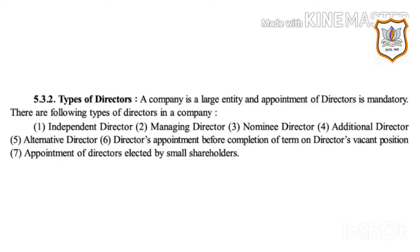Types of Directors: A company is a large entity and appointment of a director is mandatory. There are the following types of directors in a company: 1. Independent Director, 2. Managing Director, 3. Nominee Director, 4. Additional Director, 5. Alternative Director, 6. Director appointed before completion of term on a director's vacant position, and 7. Director elected by small shareholders.